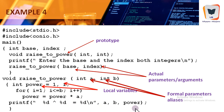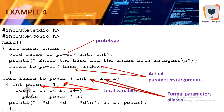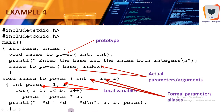The function displays the power value along with the base and index, then terminates. When the closing brace is reached, control returns to main at the point just after the function call statement. Since there is nothing after that in main, the closing brace is seen and main hands control back to the operating system.